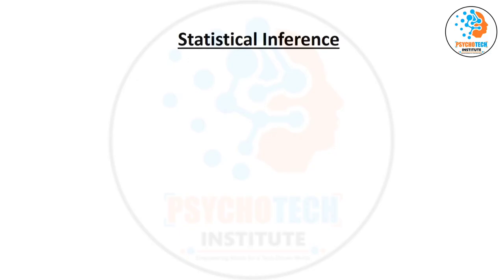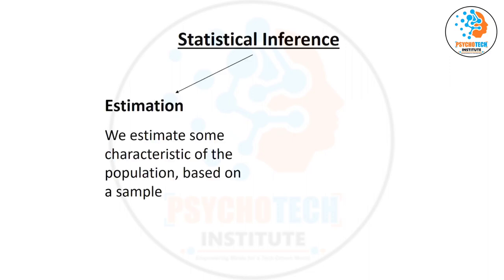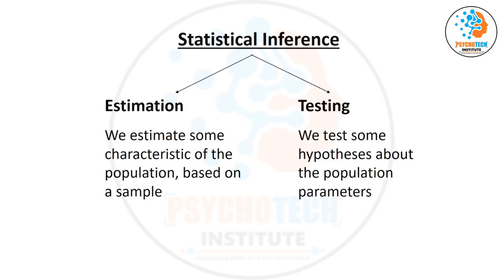In statistical inference, we are concerned about two things. The first is estimation — how to present a variable. The second concept is testing of hypothesis — how to find the relationship between variables.